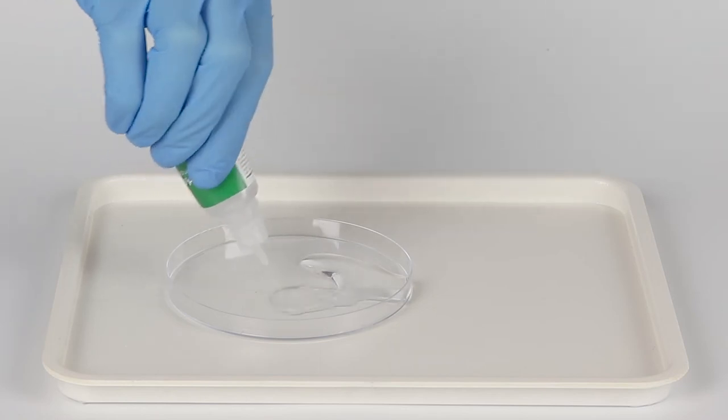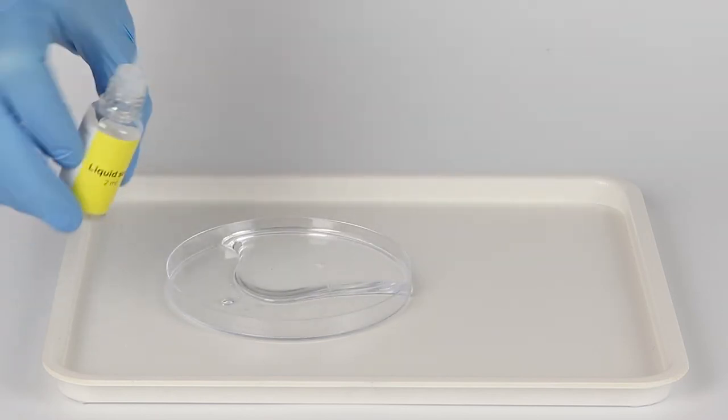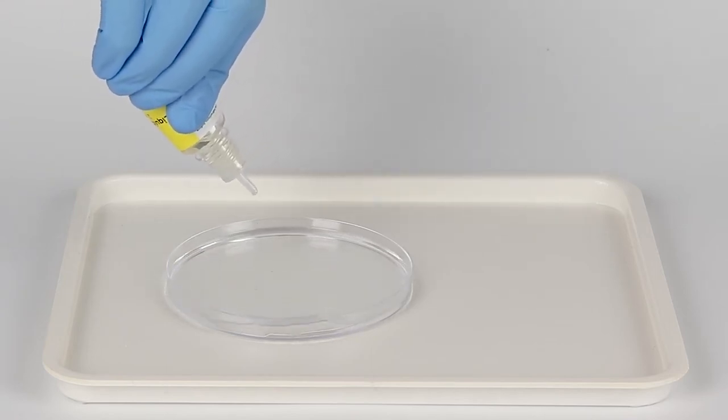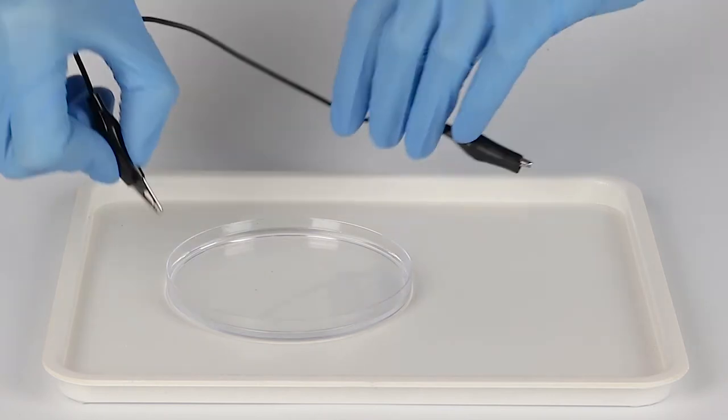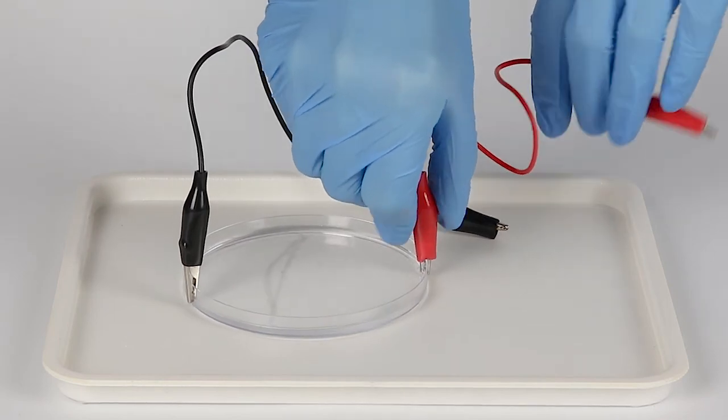Then pour everything into the petri dish. Add two droplets of liquid soap to make the liquid spread evenly across the bottom of the petri dish. When the liquid soap is added, it reduces the surface tension of the solution. In other words, it acts as a surface active agent, causing the solution to spread. Now attach the crocodile clip wires to opposing sides of the petri dish so that